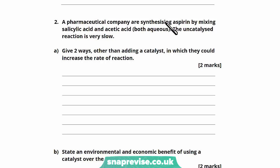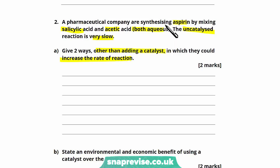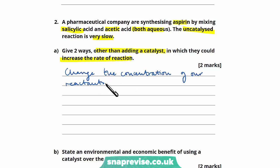Question two: a pharmaceutical company is synthesizing aspirin by mixing salicylic acid and acetic acid, both aqueous. The uncatalyzed reaction is very slow. Give two ways, other than adding a catalyst, to increase the rate of reaction. Since we're working with aqueous reagents, increasing pressure — which would work for gaseous reagents — is not possible. Instead, we can alter the concentration of the reactants, or alter the temperature of the reaction.